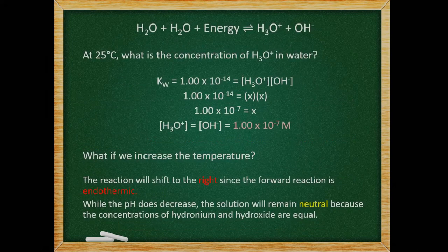At 25 degrees Celsius, what is the concentration of hydronium ions in water? Using the Kw equation, we are able to use algebra to solve for x. Since there is a 1-to-1 stoichiometry ratio between the hydronium and the hydroxide ions, they will both have the same concentration. If we increase the temperature, there will be a right shift because the forward reaction is endothermic. Endothermic reactions are more sensitive to temperature change. An increase in temperature will cause both the forward and reverse rate to increase, but the forward rate will increase more than the reverse, leading to an increase in products. Although the concentration of both hydronium and hydroxide ions has increased, the solution remains neutral because the concentration of both ions still remains equal.